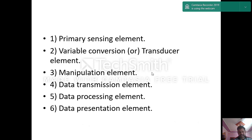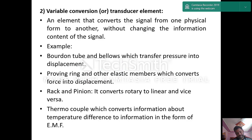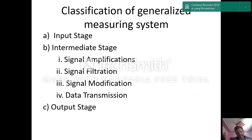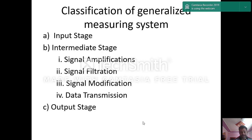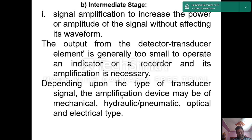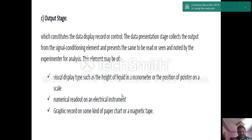The generalized measurement system has three stages: input stage — sensor and transducer; intermediate stage — manipulator, transmitter, and processor; and output stage — controller, indicator, and recorder. The indicator shows whether the system is within limits, and recording is for future purpose.